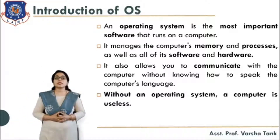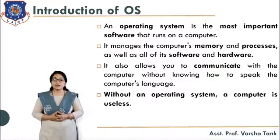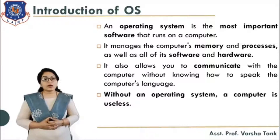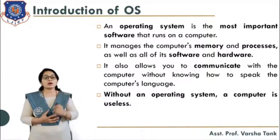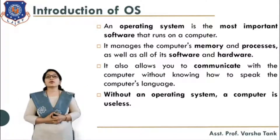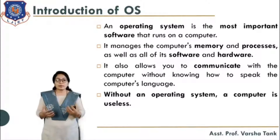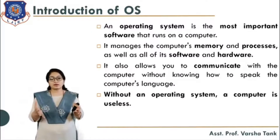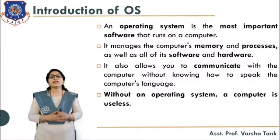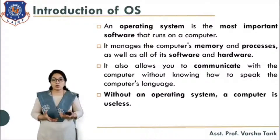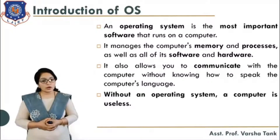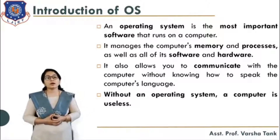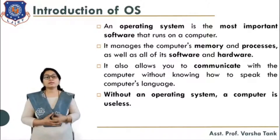An operating system is the most important software that runs on the computer. We can say the operating system is ultimately one type of software that runs on your computer. It manages the computer memory and processes, as well as all of its software and hardware. Hardware means the devices and peripherals needed for the entire computer system — for example, mouse, keyboard, and printers. It also allows you to communicate with the computer without knowing how to speak the computer's language.